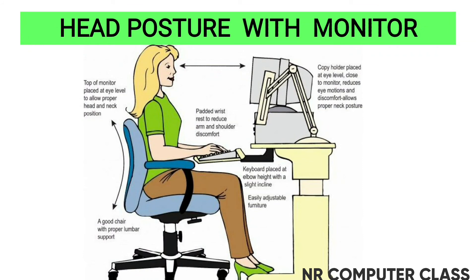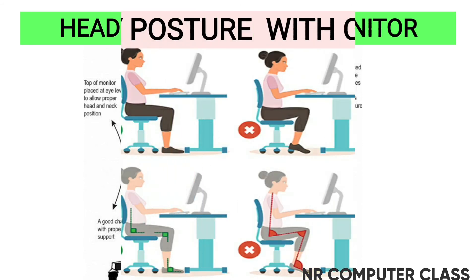Now let's learn about head posture with the monitor. We need to consider a few things to avoid neck aches or eye irritation. The top edge of the monitor should be at eye level or a little below it, so that you look down slightly. Sit at arm's length from the monitor screen to prevent watery eyes. We should blink our eyes often, and it is essential to look away every 15 to 20 minutes to take a break from the monitor. There should also be sufficient lighting in the room.